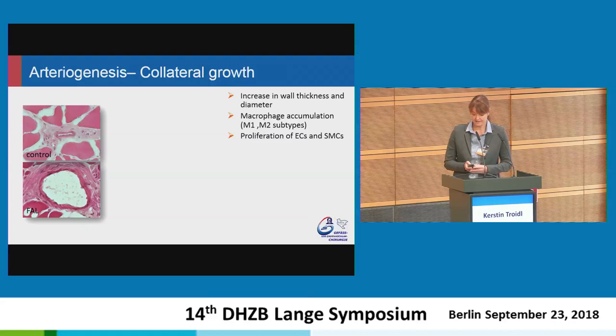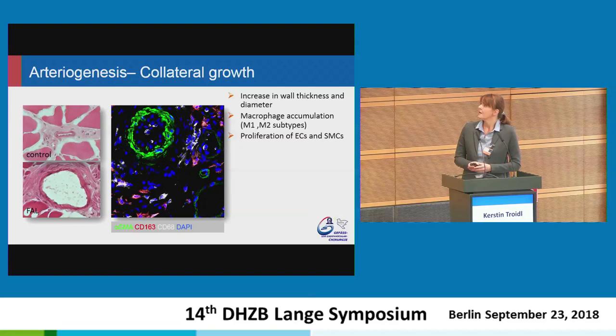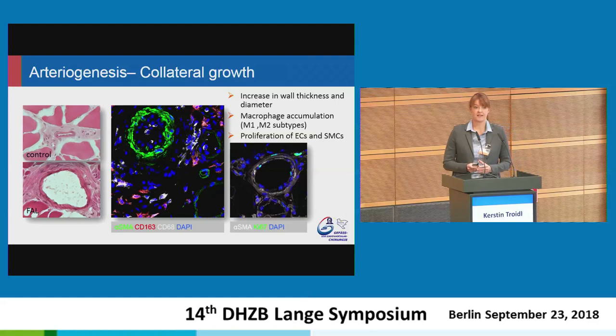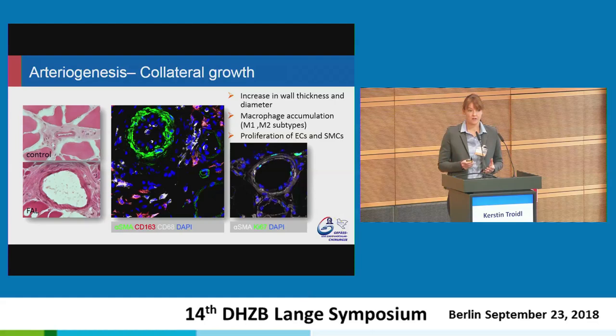We can also observe that macrophages accumulate around the vessel — here in green is the cross-section of collateral vessels, and the white and red cells are stained for different subtypes of macrophages. In addition, we can observe that these vascular cells are proliferating. Stained in green are proliferating endothelial cells and smooth muscle cells, and this is actually the growth process. These collaterals do not vasodilate — it is really a growth process.